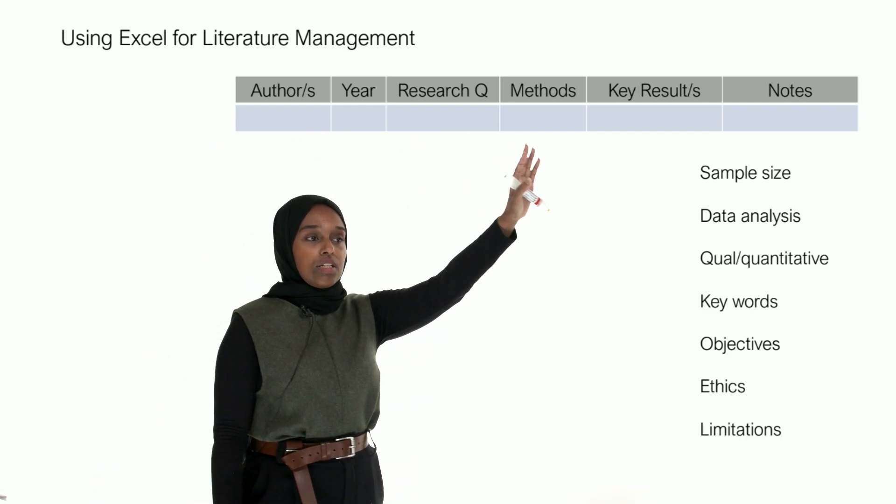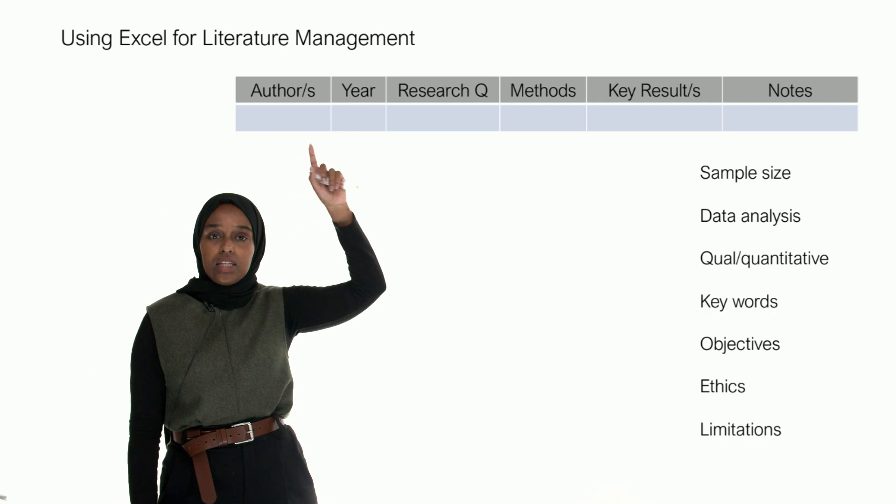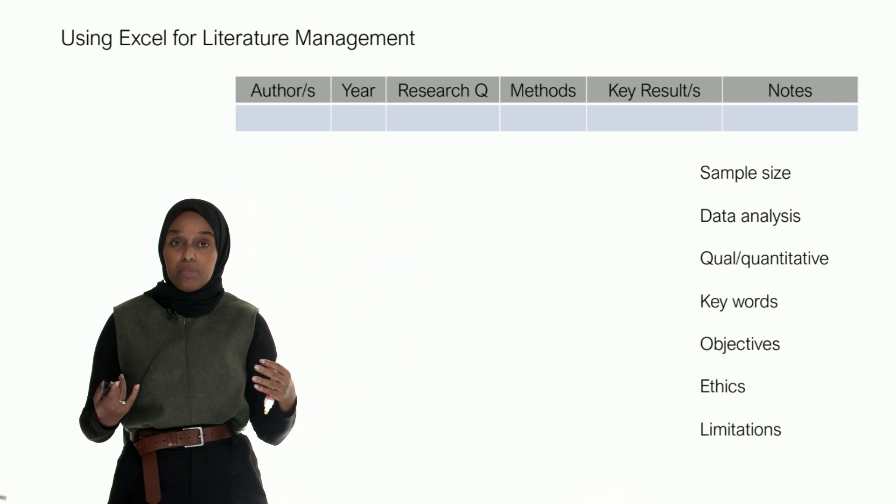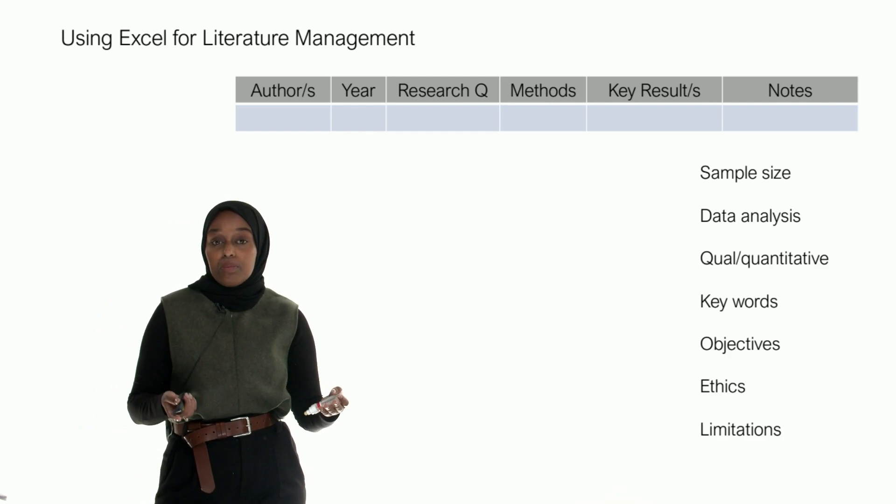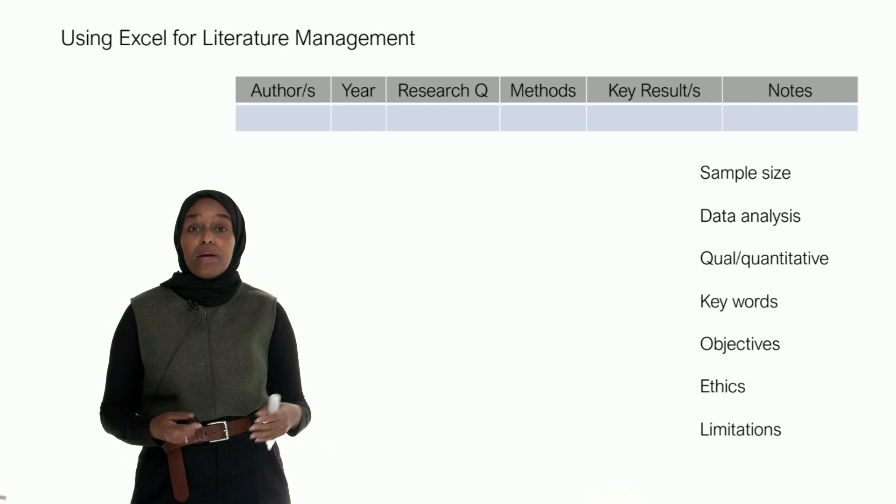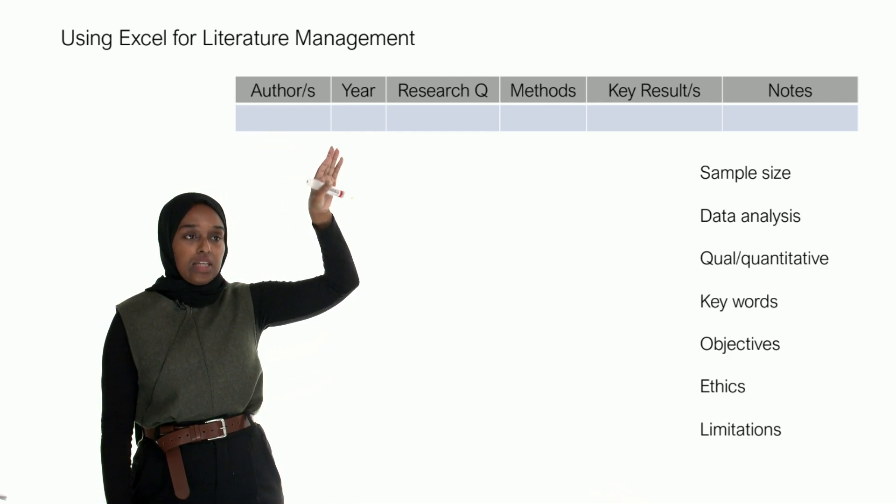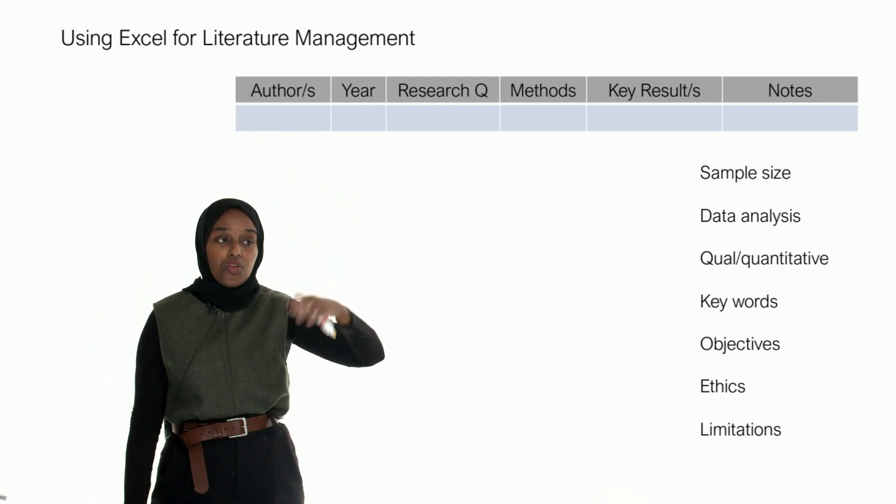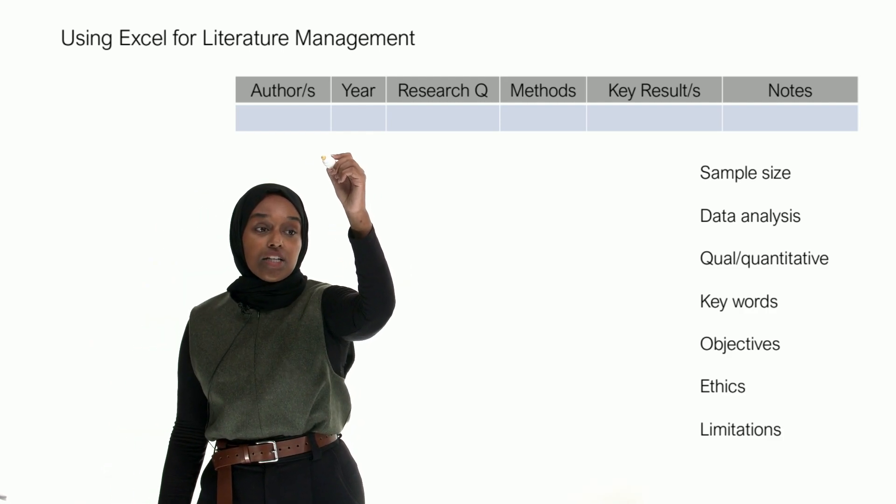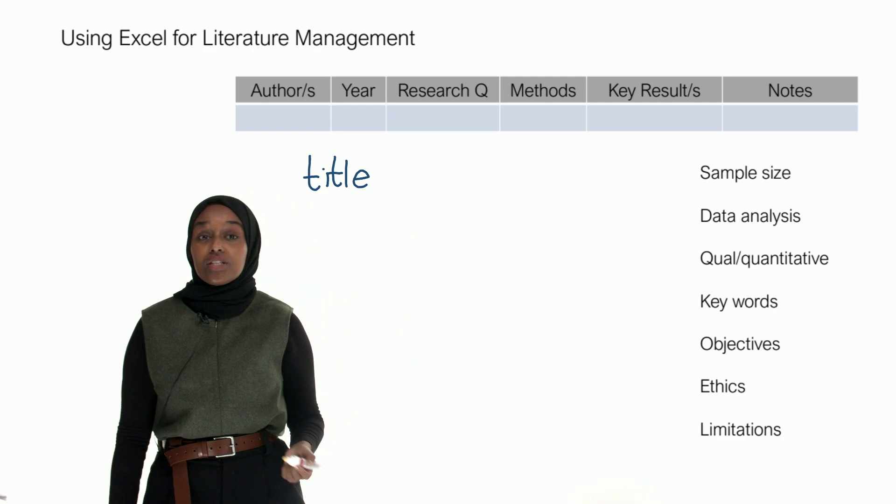So one nice thing to do is to use Excel for this managing system. You want to create a table that looks a little bit like this. What I've done is added a few key words that I look for when I read a paper. This is going to be person dependent, project dependent. So you definitely want the author names, the year. You can have a title as well.